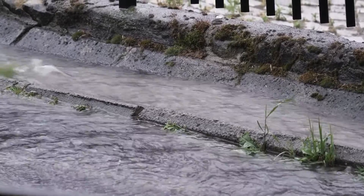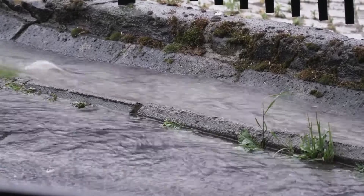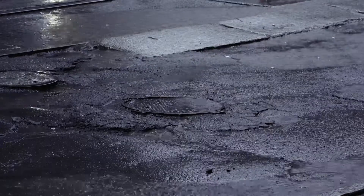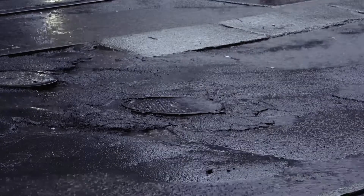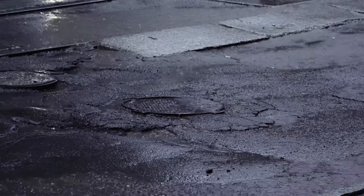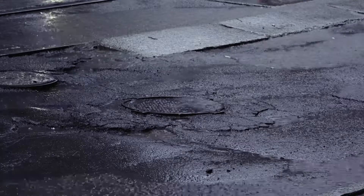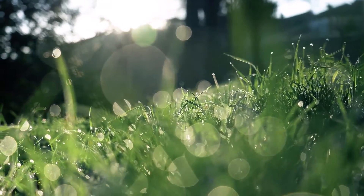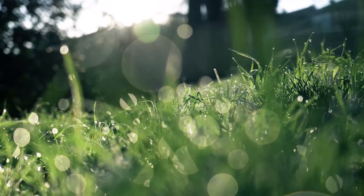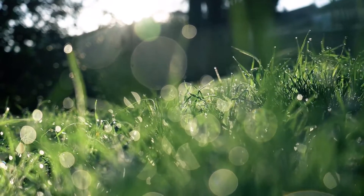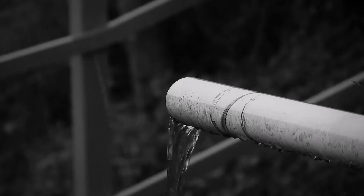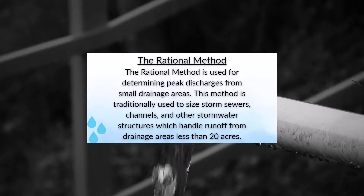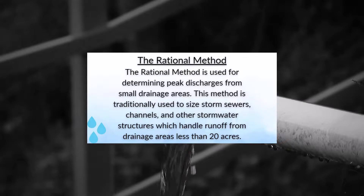Hydrologists and engineers needed methods to determine how stormwater would interact with their environment. These methods were developed close to 100 years ago and are simplistic compared to some of today's methods, but are still useful for many practices. These methods needed to be computationally simple to allow for use on a slide rule calculator. One of these methods is known as the rational method, and has been long used for calculating peak flows and other factors regarding stormwater design.